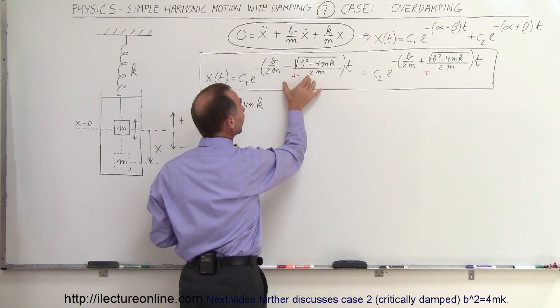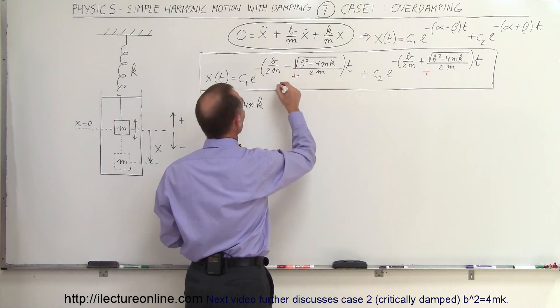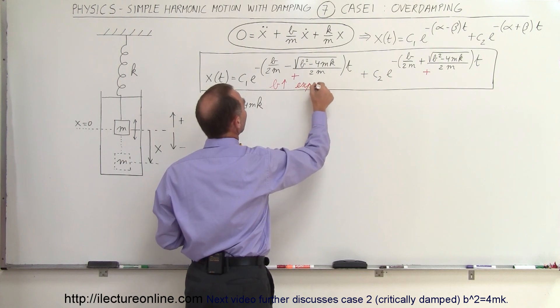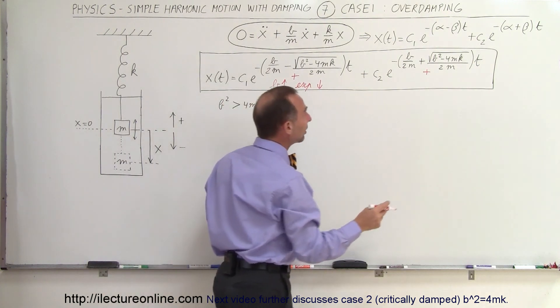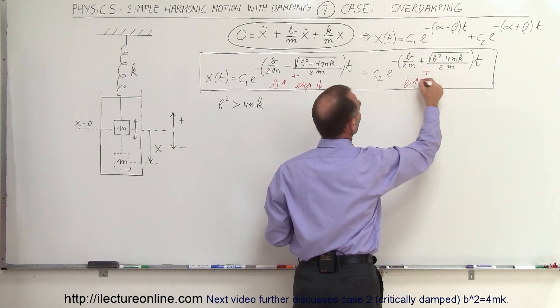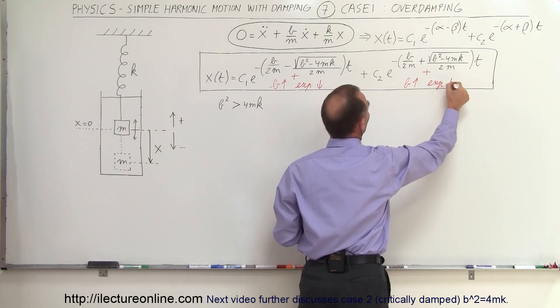So this exponent will become very small if B gets very large. So if B gets very large, the exponent gets very small. In this case, if B gets very large, the exponent gets large.